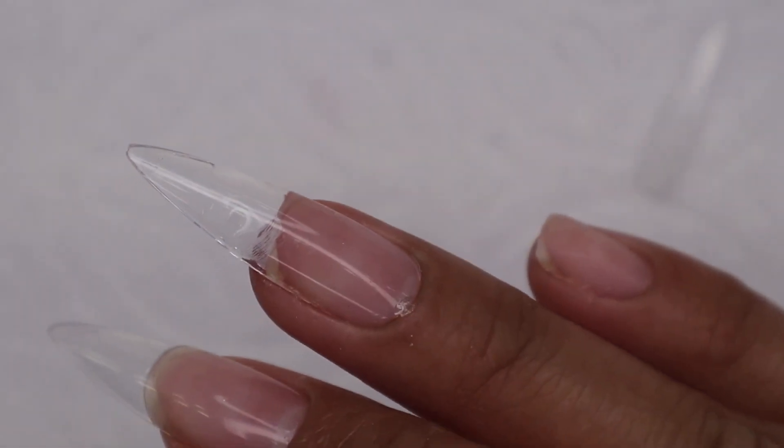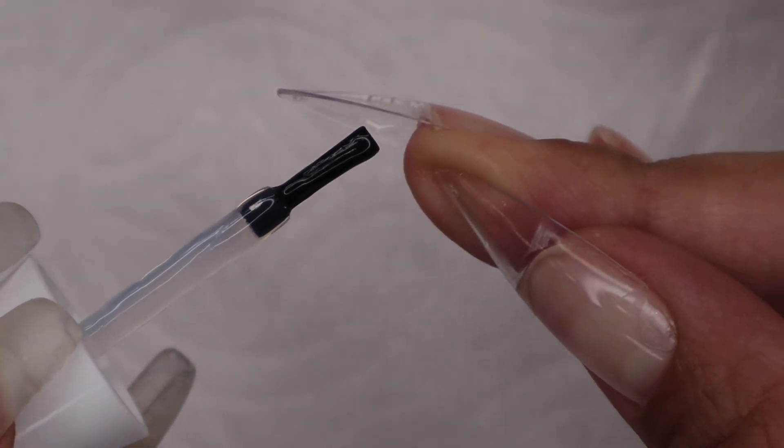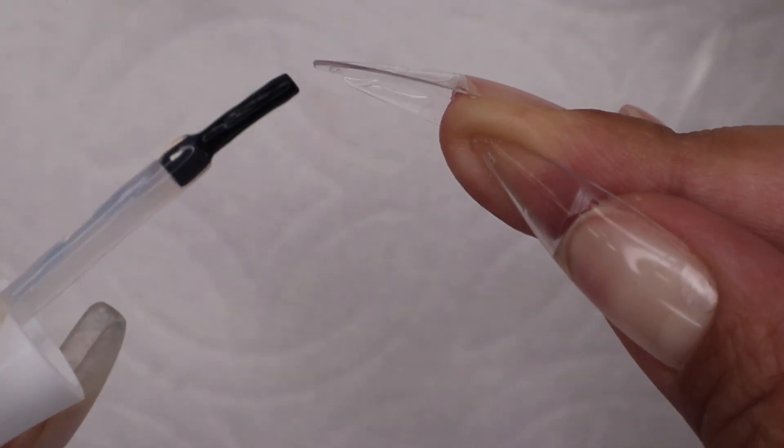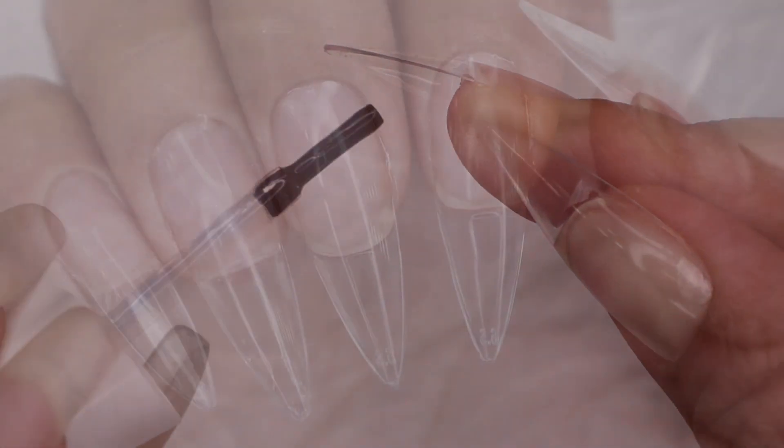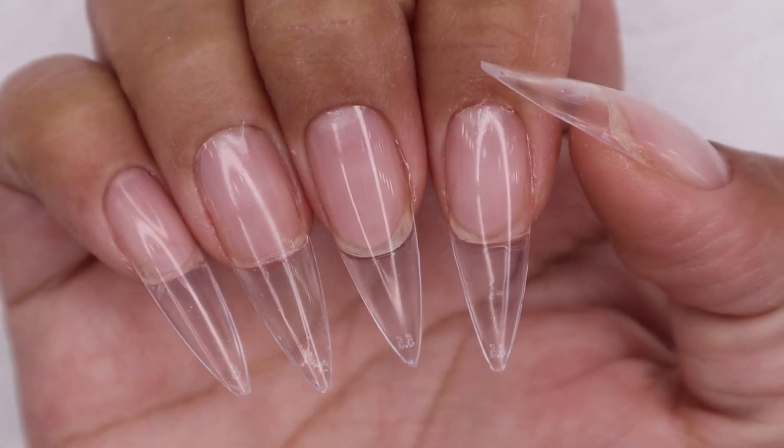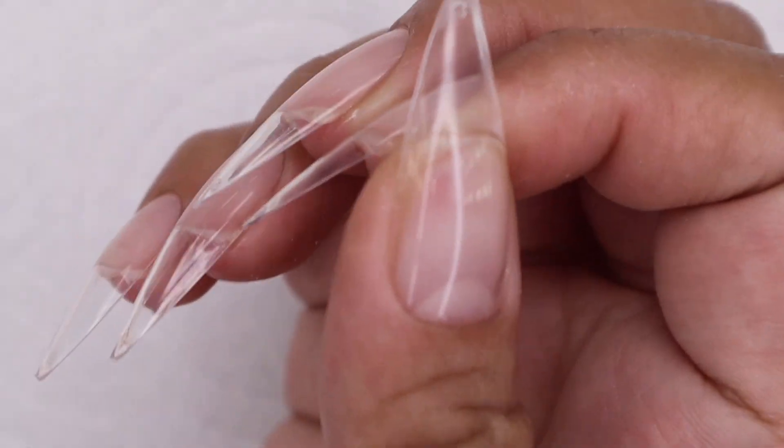As you can see, it is a lot better now. I managed to fill in that gap. Make sure to even out the gel product and then cure it in the lamp for 60 seconds. This is after I applied all the jelly tips.